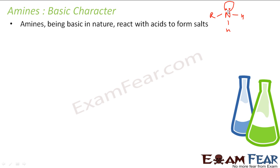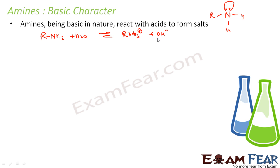Amines are also called Lewis bases because they have a lone pair of electrons to donate. There is a difference in electronegativity which makes the amine a reactive compound. For example, RNH₂ (a primary amine) reacts with water to form RNH₃⁺ and OH⁻. Since it gives OH⁻, we say it is a base.